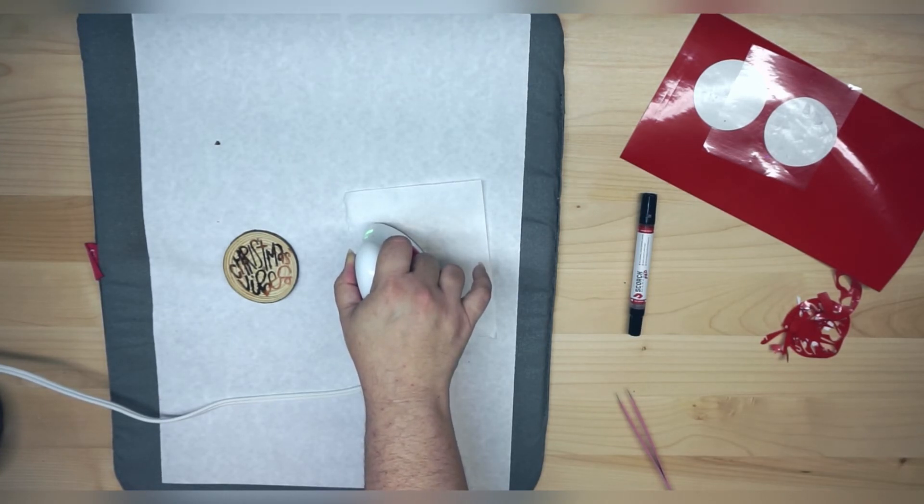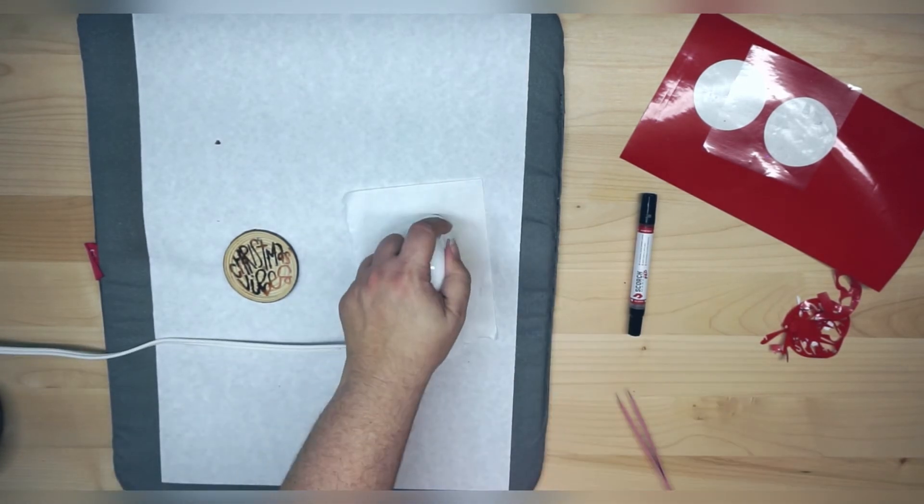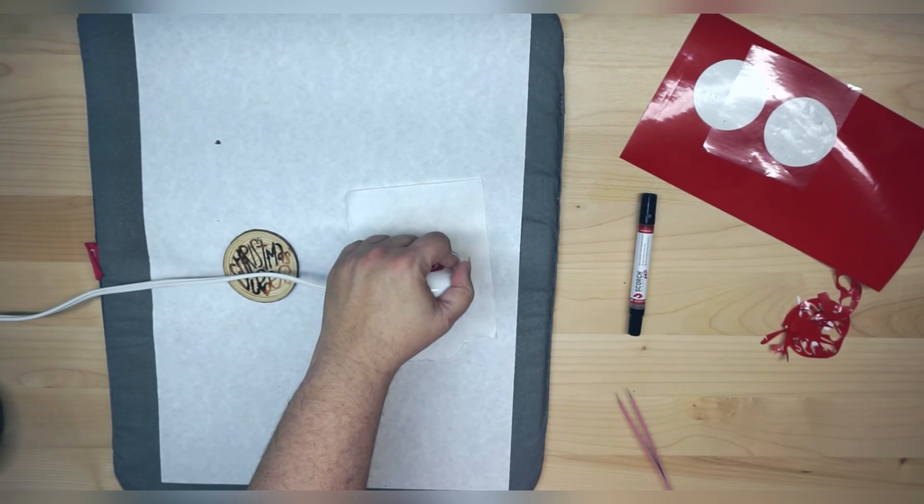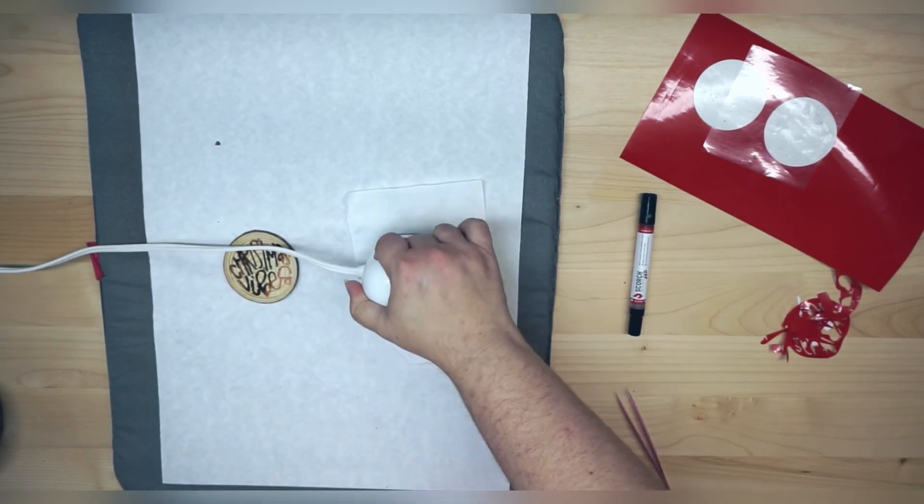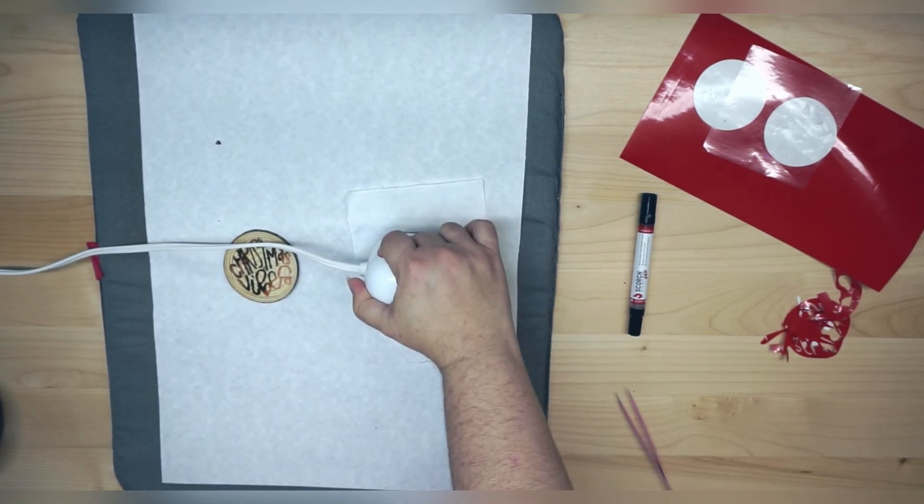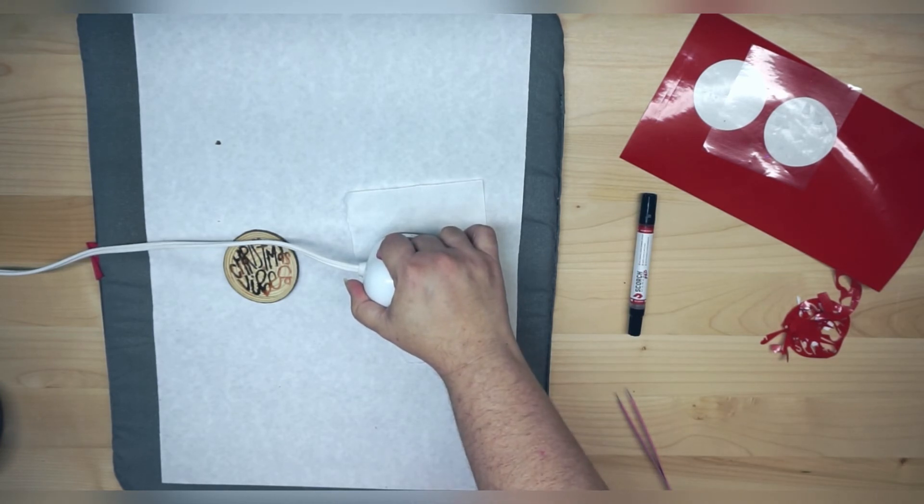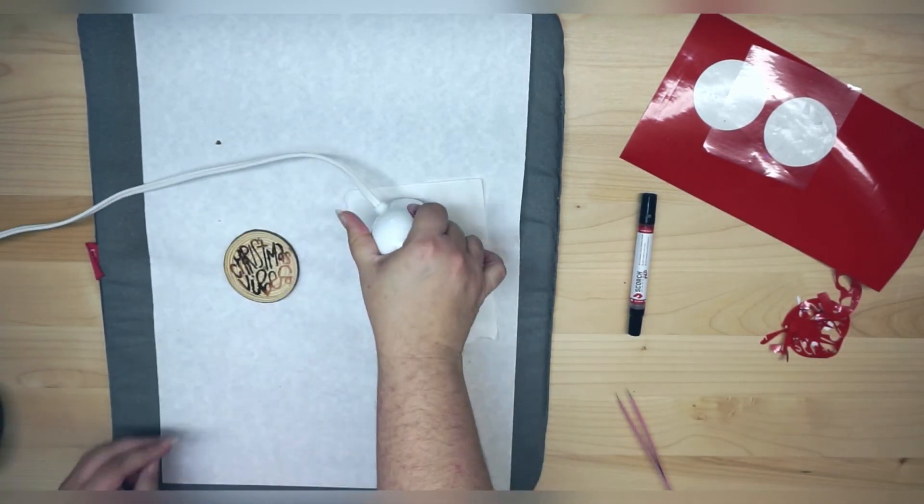And we are just going to apply the heat straight to the ornament. Now, like I said, I'm using my EasyPress. I'm going to leave this for about 60 seconds, but you can also do this with your household iron, just like you would do with heat transfer vinyl or anything like that. So I'm definitely excited about that. So you don't even have to go out and buy a heat gun.